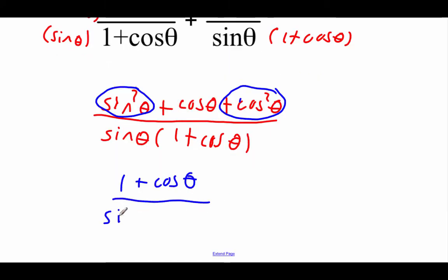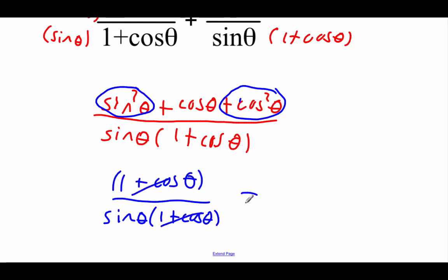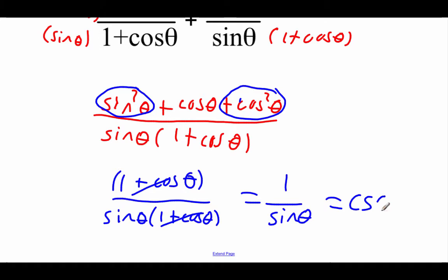Sine squared plus cosine squared is 1, so we've got 1 plus cosine of theta left on top. On bottom, we've still got sine of theta times 1 plus the cosine of theta. We have a term on top that also shows up on bottom, so that cancels out, and we're left with 1 over the sine of theta. We don't typically want to leave our answers as fractions, so we use a reciprocal identity to say this is the cosecant of theta.